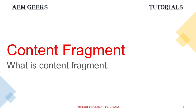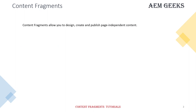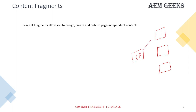In this tutorial I will talk about the basics of content fragment and its architecture. Content fragments allow you to design, create, and publish page-independent content. Suppose you have a page and you need some content on it — normally you would create that content on each page separately. But with content fragments, you create one content fragment with that content and reuse it across different pages.